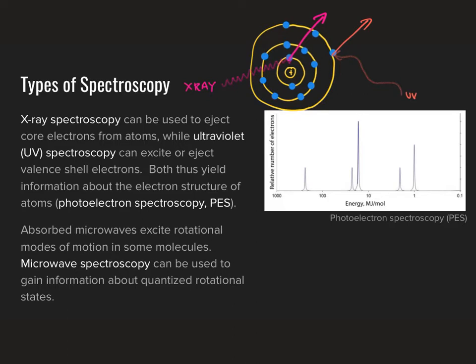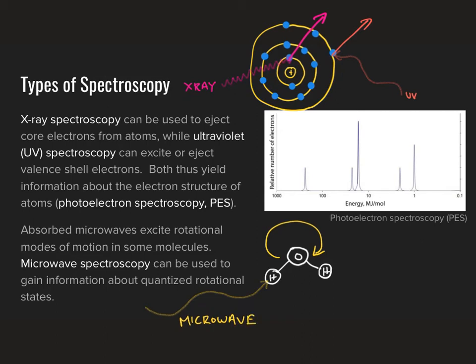One last type of spectroscopy to be familiar with is microwave spectroscopy. Generally, microwave spectroscopy can be used to gain information about rotational states of molecules, because when some molecules absorb microwaves, it causes them to rotate. This is the same process that your microwave uses in your kitchen. The water molecules, when they absorb microwave radiation, have rotational modes of motion excited, and as they spin they produce frictional heating, which causes your food to warm up. Those are our four main types of spectroscopy, and on our next slide we're going to move on to looking at how we can use photoelectron spectroscopy to gain insight into energy levels of electrons in atoms.